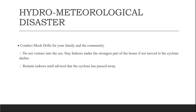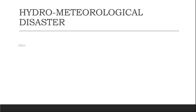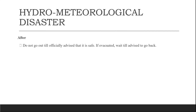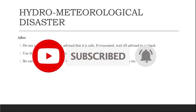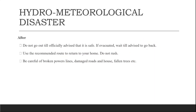After the disaster: first, do not go out until officially advised it is safe; if evacuated, wait until told to go back. Second, use recommended routes to return to your house and do not rush. Third, be careful of broken power lines, damaged roads and houses, and fallen trees. These are the main three points to consider after a cyclone disaster has occurred.